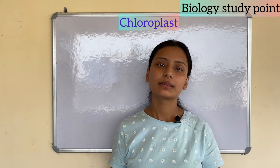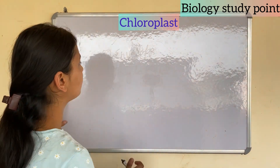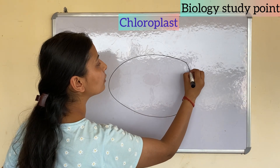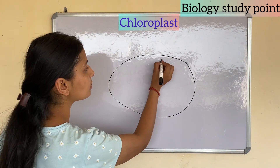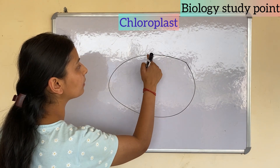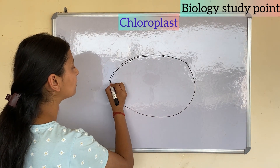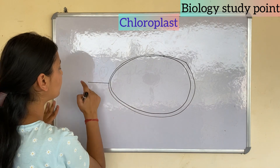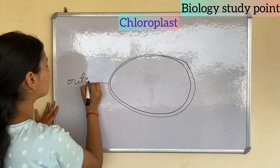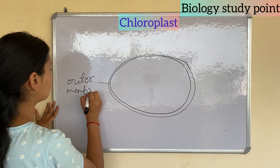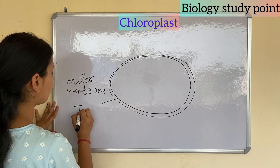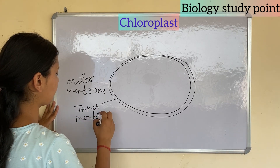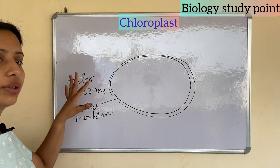Now let me draw the diagram of a chloroplast. First I will draw the outer membrane, and beneath it the inner membrane. These two membranes together form the envelope of the chloroplast.